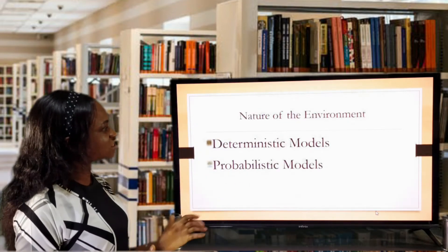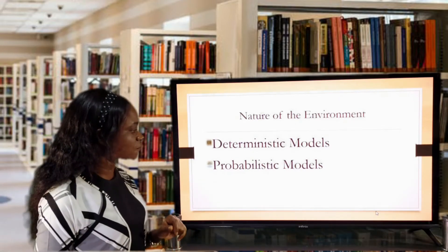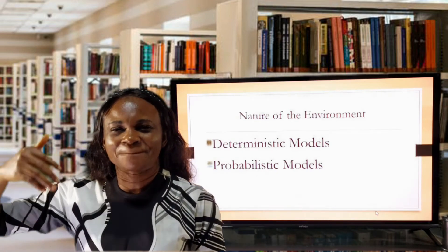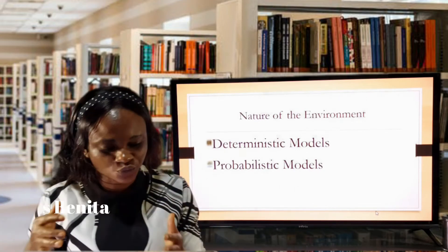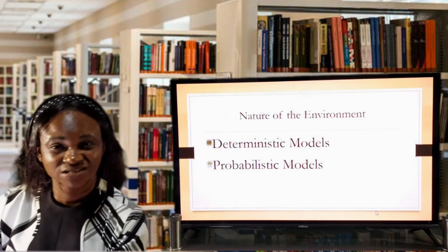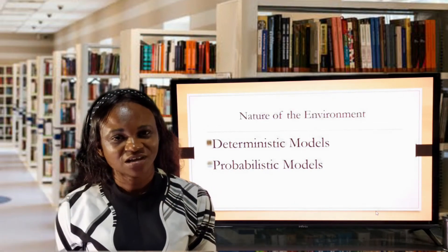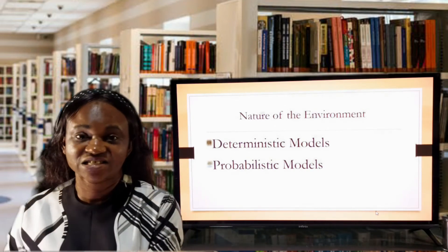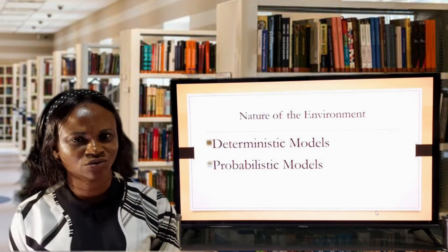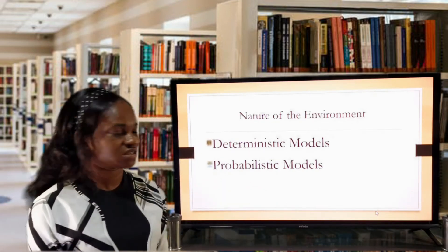We have the next classification of model, which is the nature of the environment. The nature of the environment determines the classification and it is divided into two basic types: the deterministic model and the probabilistic model. Deterministic models are models that are predetermined — people can determine the outcome. For instance, you invest two and expect to get four; if you invest four, you expect eight; if you invest eight, you expect sixteen. The outcome is certain — it is not based on uncertainty. Our linear programming model, our linear assignment model, our EOQ model as formulated by F.W. Harris all fall into that category. That's why the EOQ assumptions tell you that price is fixed, demand is constant, and lead time is non-variable — because it is a deterministic model.